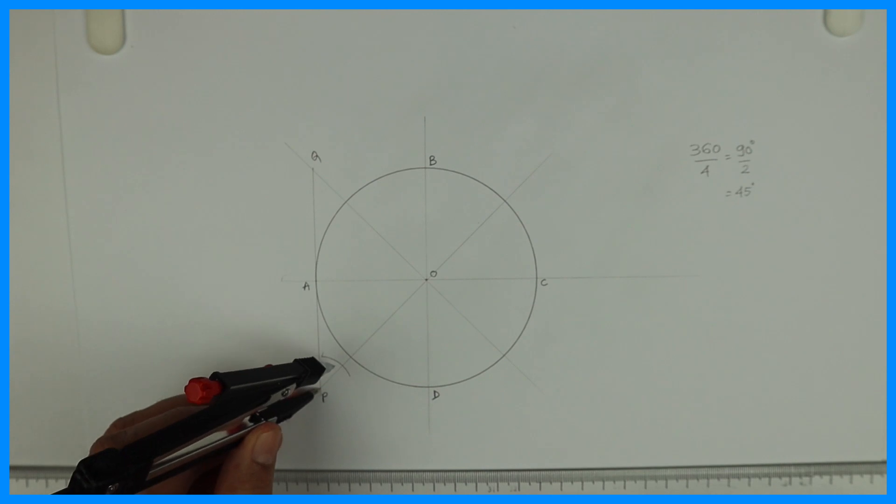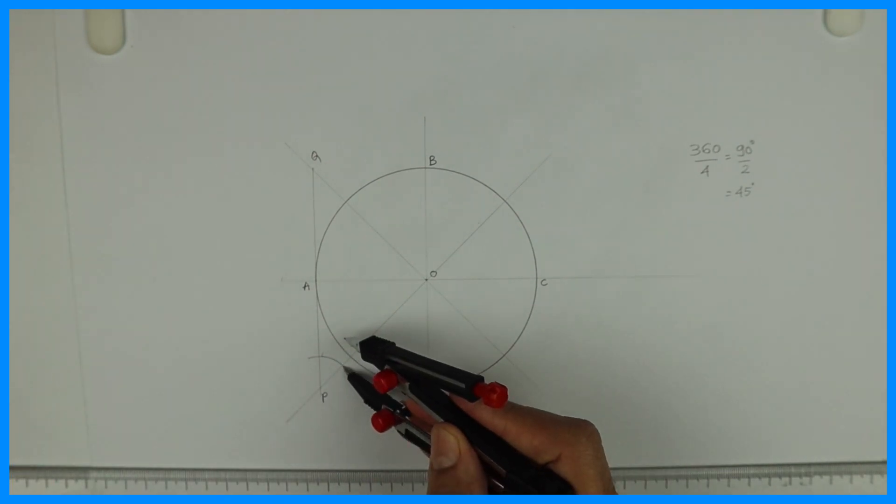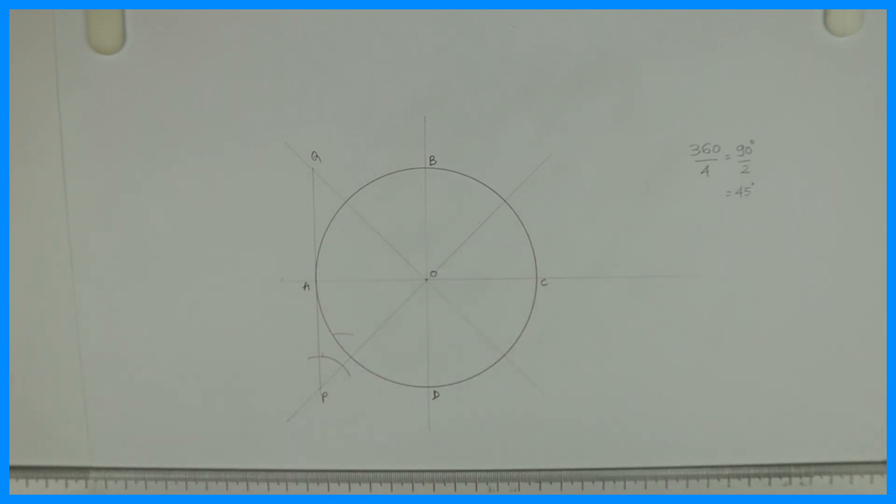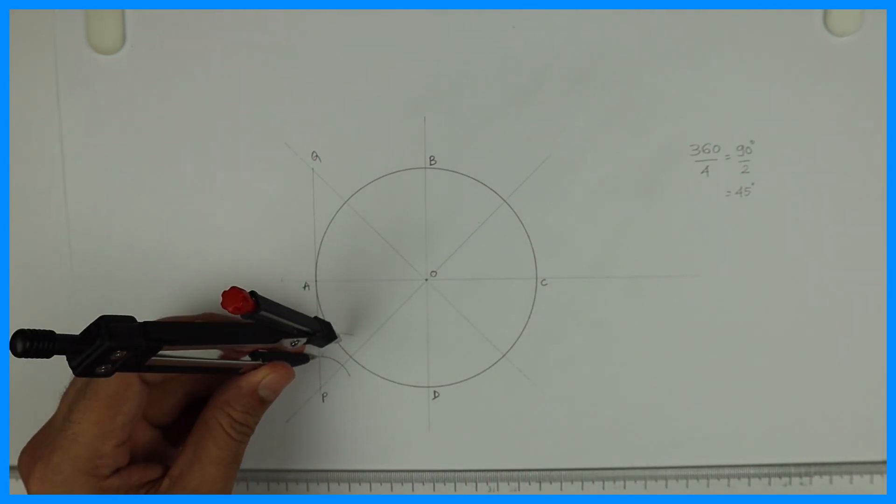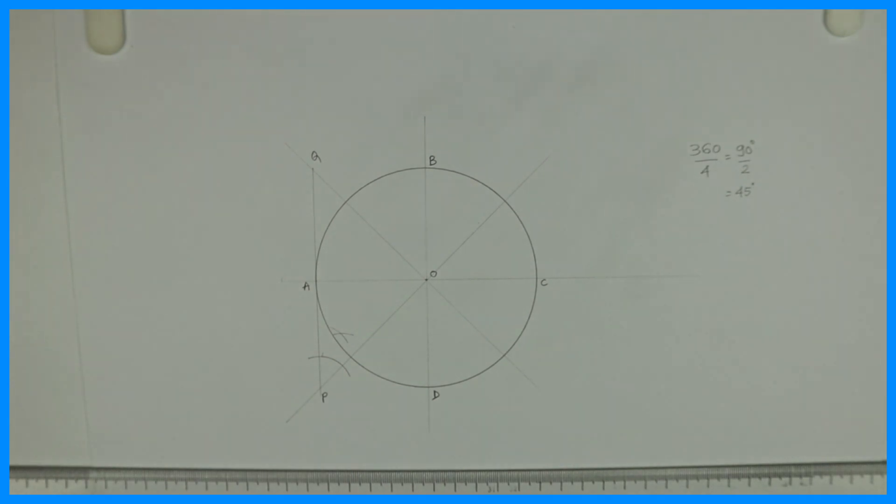We are bisecting this angle APO, so we'll draw an arc and from there we'll cut so we'll get the bisection of APO.